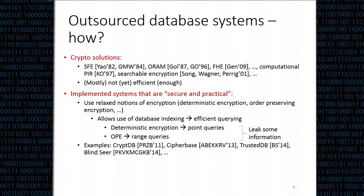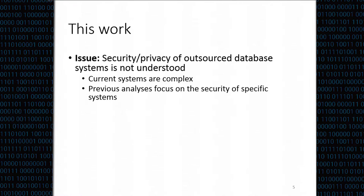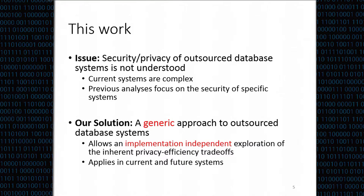The leaked information is not innocent—we have seen some attacks presented here at CCS last year. This makes us wonder why we have this type of attack. We realized that the security and privacy of these systems is not well understood because they are complicated, and all previous attacks and analysis are specific to each different system. What we offer in this work is a generic approach that allows us to explore the privacy-efficiency trade-off through an implementation-independent exploration, enabling us to argue about the privacy and efficiency of all current systems and future ones, without making assumptions about the cryptographic tools they use.